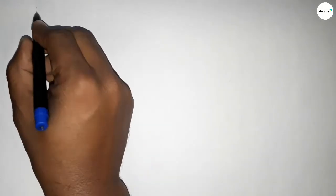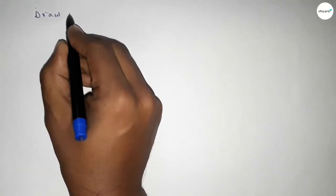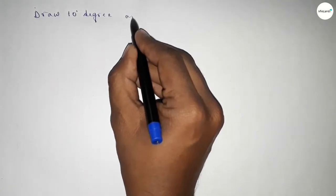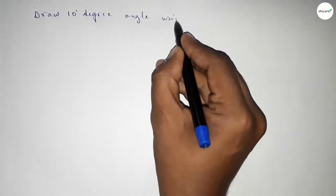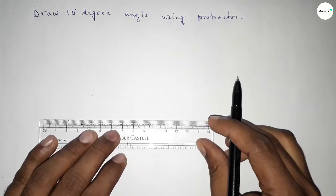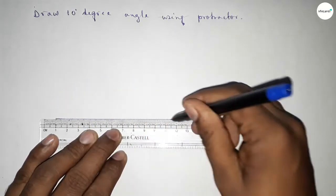Hi everyone, welcome to SSR Classes. Today in this video we have to draw a 10 degree angle by using a protractor. So, constructing a 10 degree angle. Let's start the video. First of all, we have to draw here a line of any length.